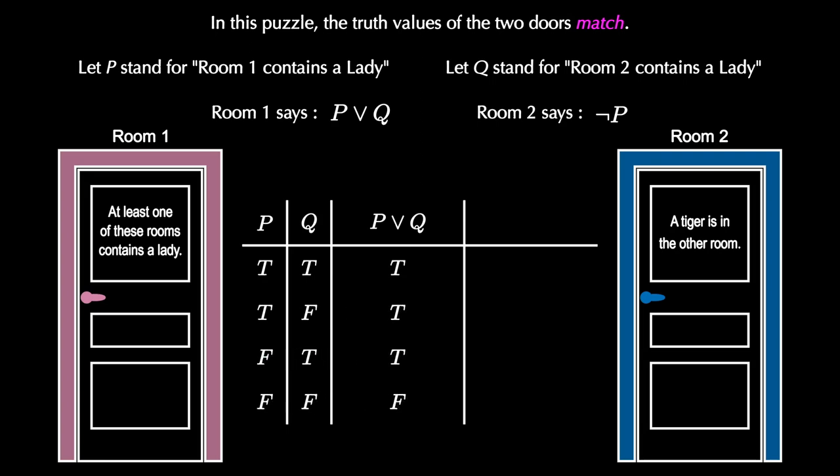And the final column is not P, which we can fill in using the negation truth table by negating or taking the opposite value of the P column.